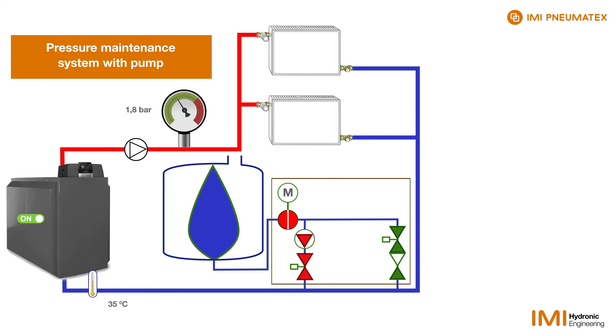If the system now cools down, the pressure also drops, for example, to 1.5 bar. The controller detects this change of value.